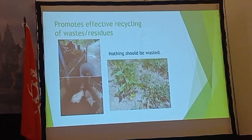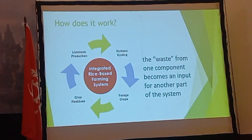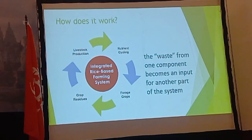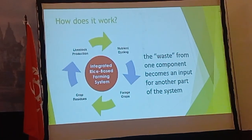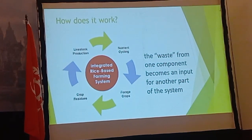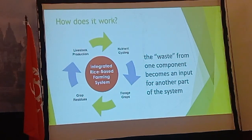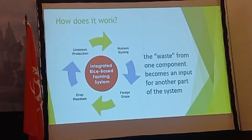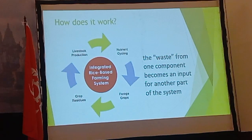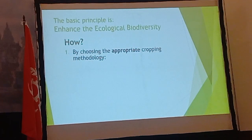It also promotes effective recycling of waste and other farm residues, so nothing should be wasted. The waste from one component in our farm can become an input for another part of the system. Livestock production and animal manures can be used as nutrients, as part of our organic compost and organic fertilizer. Similarly, forages, fallen leaves, and rice straws — those crop residues can be recycled and become organic compost. So nothing is wasted.